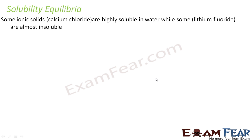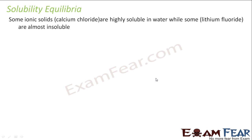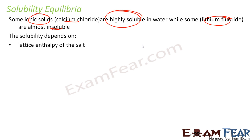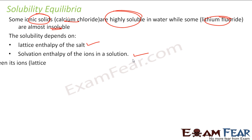The new topic is solubility equilibrium. If you observe some ionic solids like calcium chloride, they are very much soluble in water, while some — for example lithium fluoride — are almost insoluble. What is the reason why some ionic solids are soluble and some are not? Solubility depends on the lattice enthalpy of the salt and the solvation enthalpy of the ions in solution.